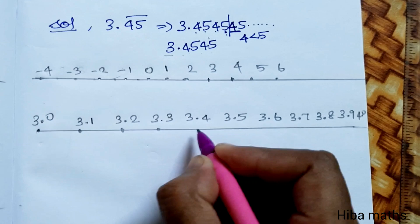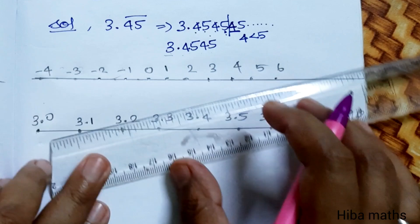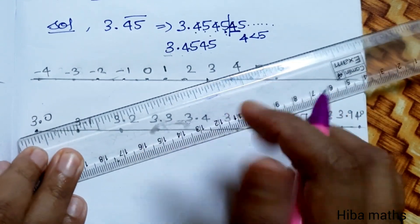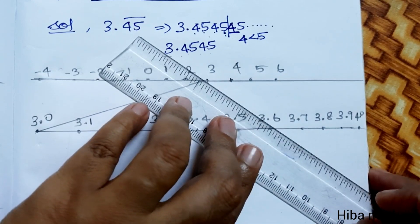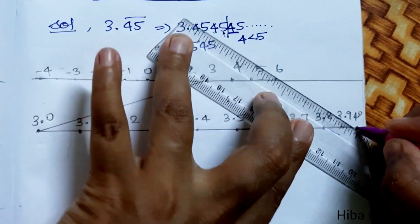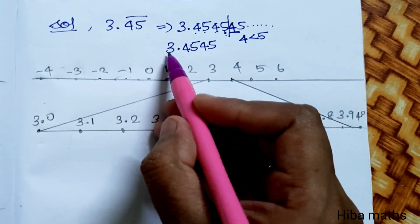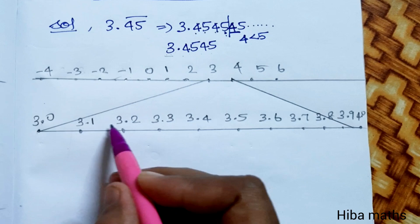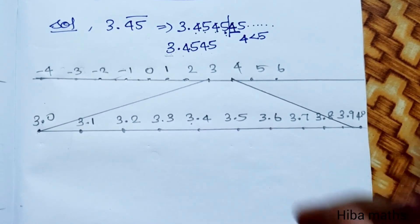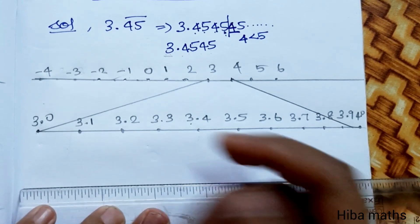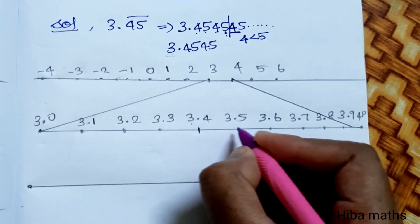Now, the point is equal to 4.0. So how do you connect the two points? 3.0 is 3 and 4 is 4.0. The point we need is 3.45. From 3.0, count 1, 2, 3 — that gives 3.4. Between 3.4 and 3.5 lies 3.45. Add the line.